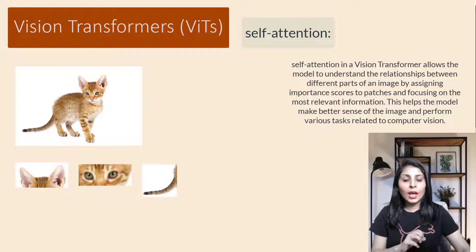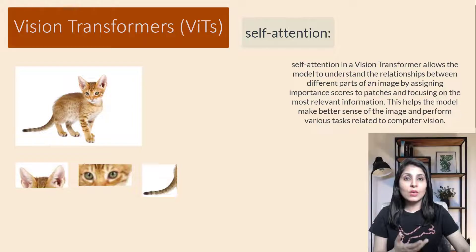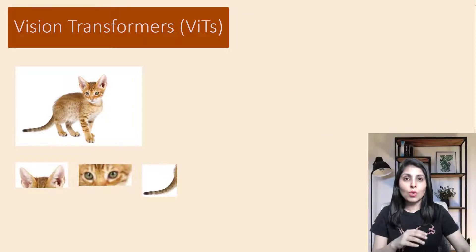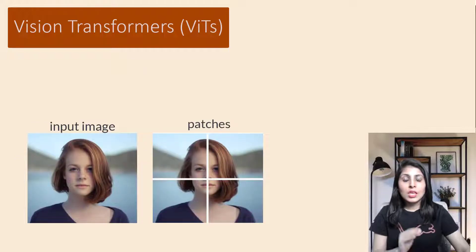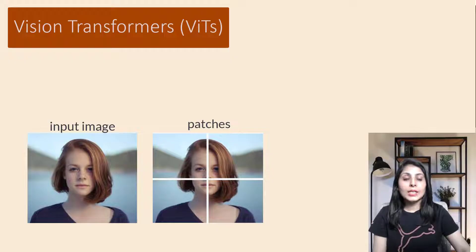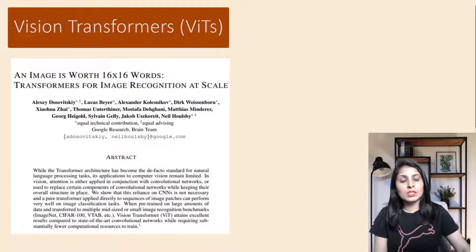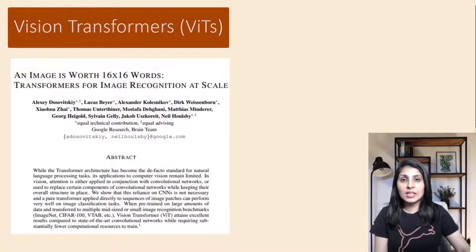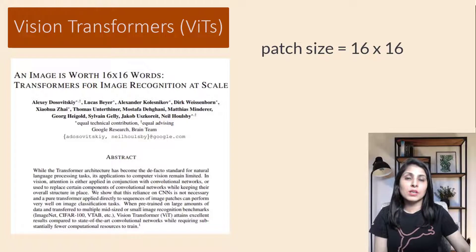Vision transformers break down the image into smaller parts called patches. Each patch is typically a square region of the image. In the original paper titled 'An Image is Worth 16×16 Words: Transformers for Image Recognition at Scale,' the authors used a patch size of 16×16 pixels.